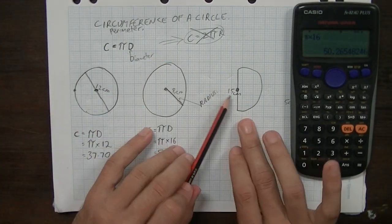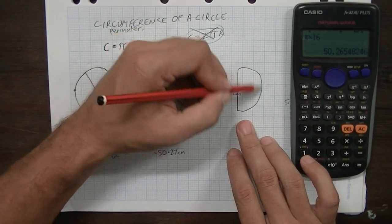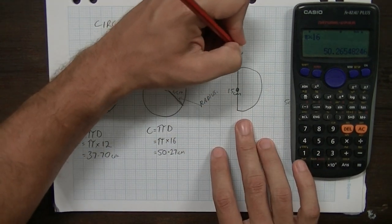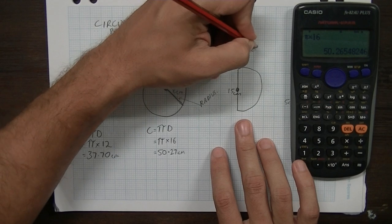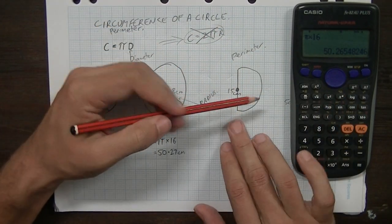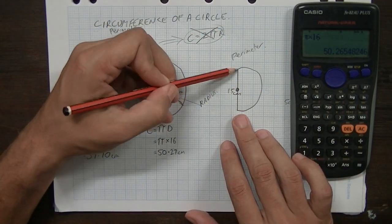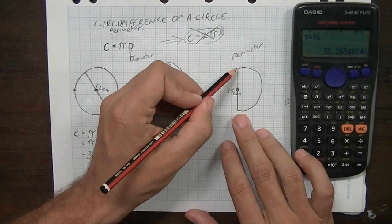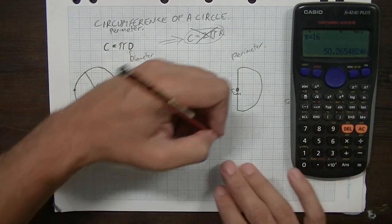Okay, moving on. This is a half circle or a semicircle. Now, if we want to know the perimeter, we're going to need to find two things. We're going to need to find the straight bit, and we're going to need to find the curvy bit. Okay, so I'm going to do them in two separate sections.